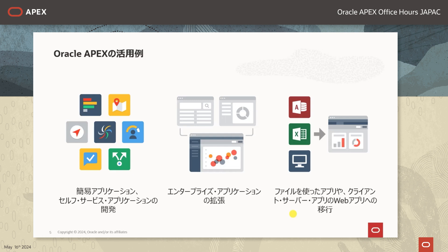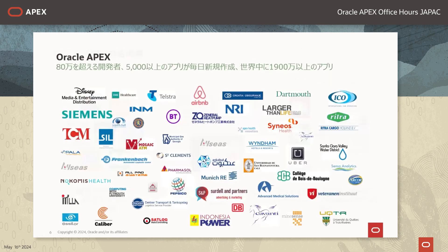3つ目の活用例としまして、ファイルを使ったアプリ・クライアントサーバーアプリのウェブアプリへの移行がございます。ExcelやAccessファイルをAPEXに取り込んでいただくだけで簡単にウェブアプリを作ることができます。Oracle APEXは80万人を超える開発者の方にお使いいただいており、こちらはOracle APEXをご採用いただいている企業様の一部となります。